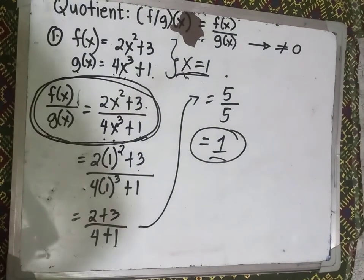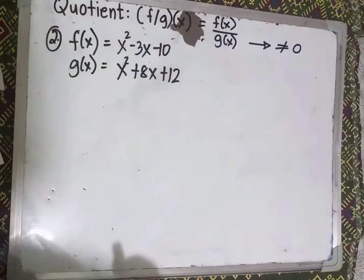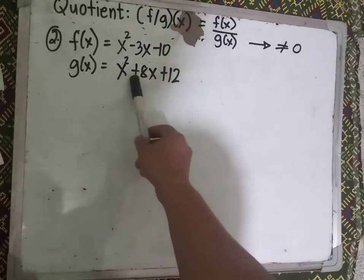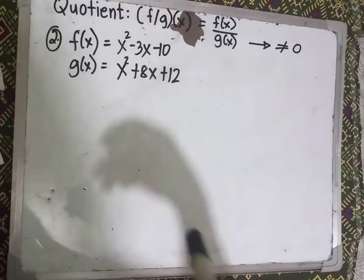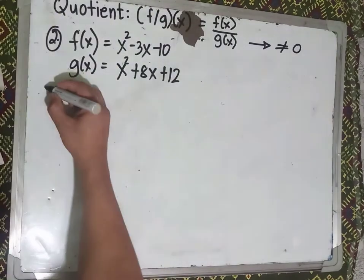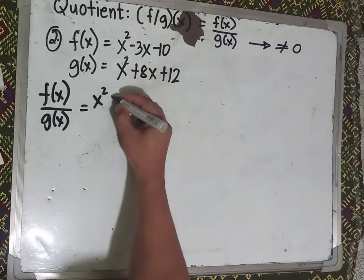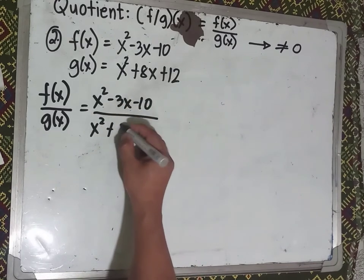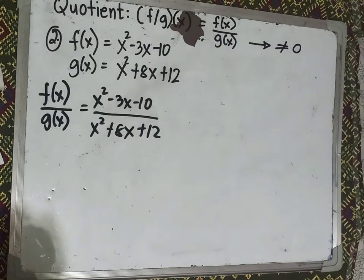Let's proceed to example number 2. If f(x) = x² + 3x − 10 and g(x) = x² + 8x + 12, find the quotient. Using the formula f(x)/g(x), we write x² − 3x − 10 over x² + 8x + 12. Let's check if the numerator is factorable — yes it is.